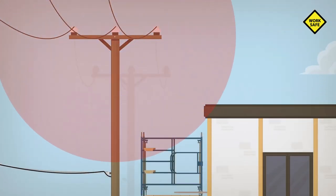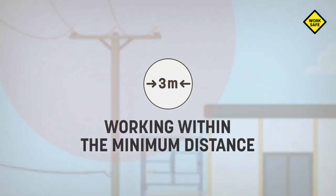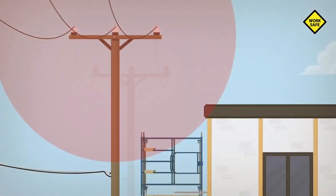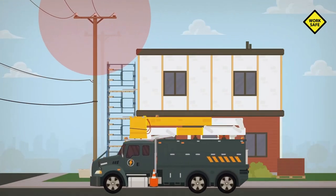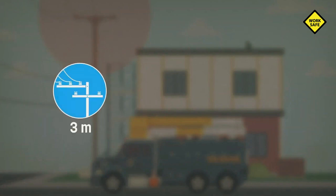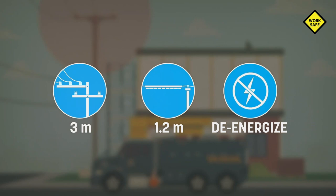If you're required to work within 3 meters of medium voltage lines, you must first contact the electric power company. Working with the contractor, the power company will come up with the best solution for making the job site safe. Solutions include moving the lines further away to maintain the 3 meter distance, putting a protective sheath on the line so that you can work at a distance of 1.2 meters, or simply de-energizing the lines.